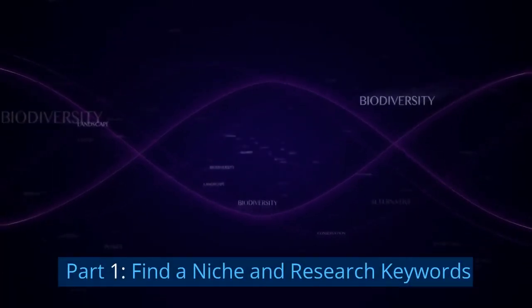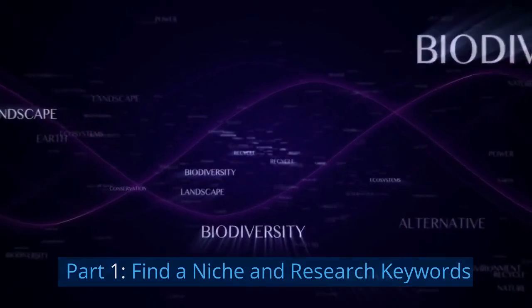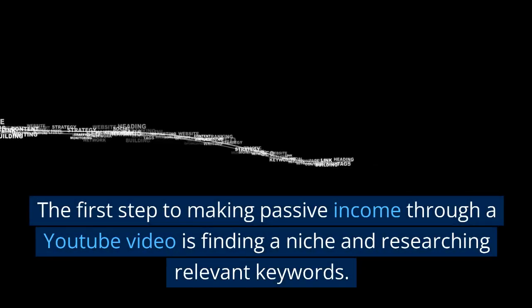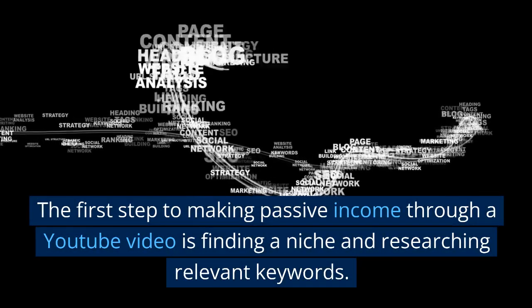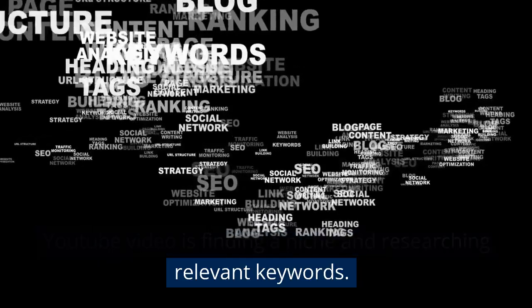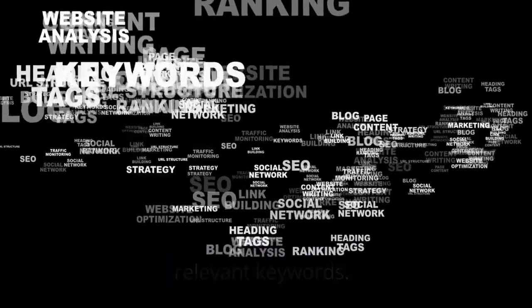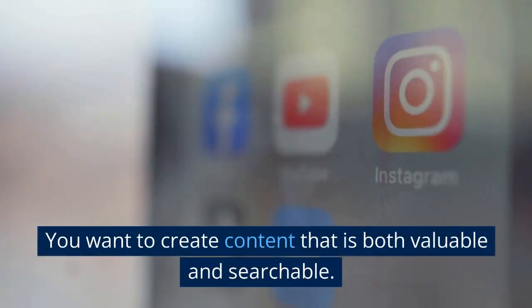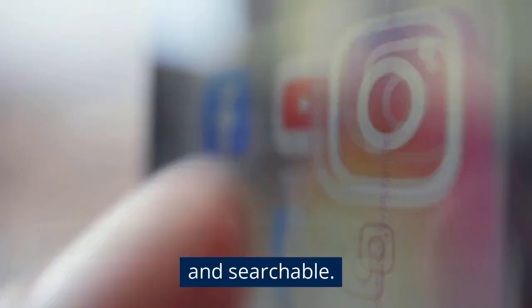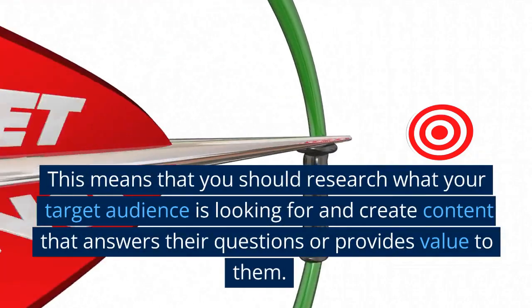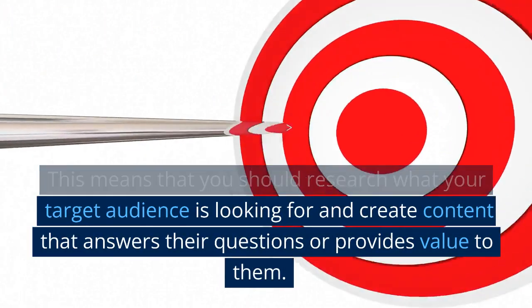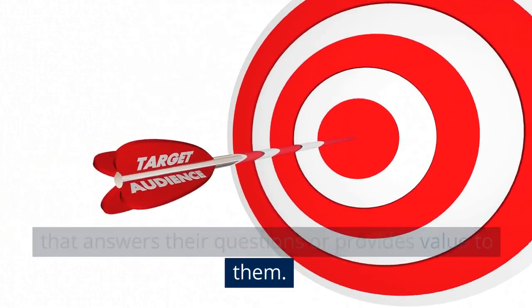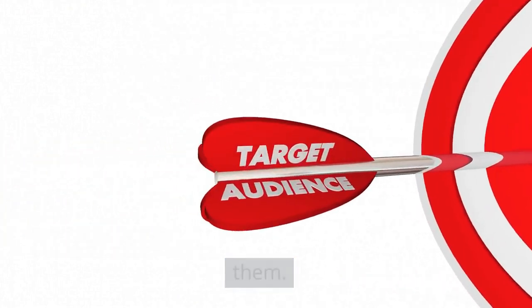Part 1: Find a niche and research keywords. The first step to making passive income through a YouTube video is finding a niche and researching relevant keywords. You want to create content that is both valuable and searchable. This means you should research what your target audience is looking for and create content that answers their questions or provides value to them.